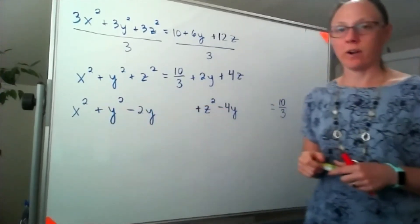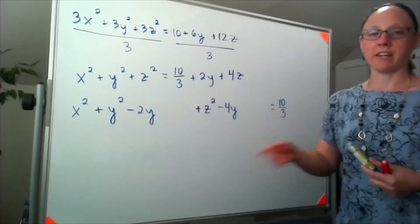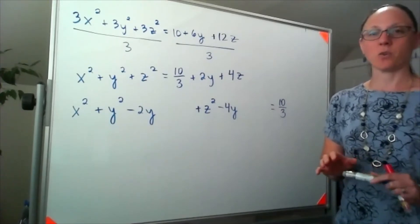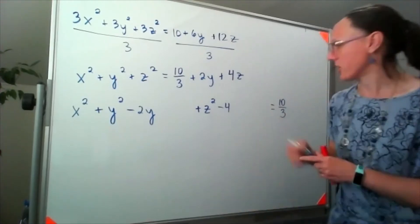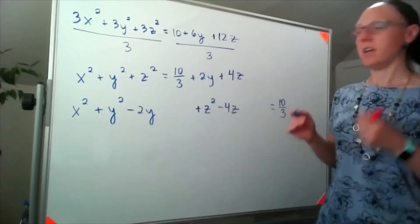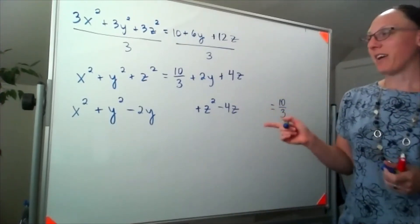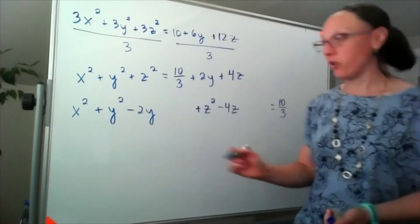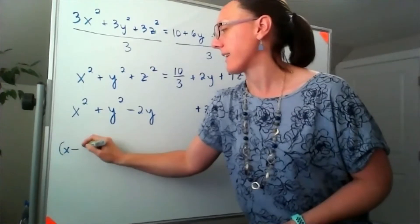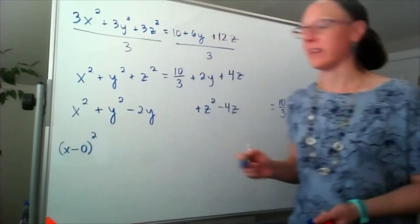Well, that x squared term, because we don't have any other x's, that means we're sort of done with that. And thank you for catching my mistake, it's 4z. Okay, so we are sort of already done with that x term. We could write that as x minus 0, whole thing squared.